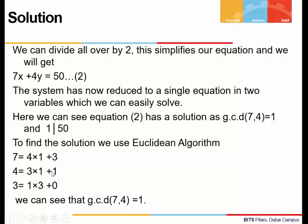Lastly, we divide 3 by 1 and we get 3 = 1×3 + 0. We will stop because the remainder is 0. We can see that 1 is the GCD of 7 and 4.